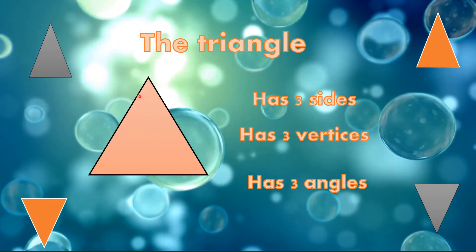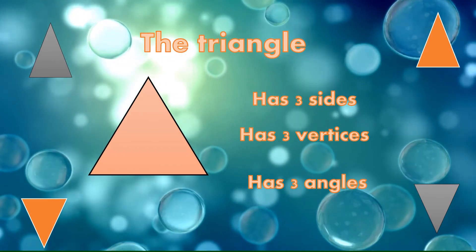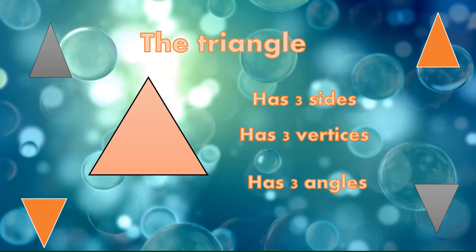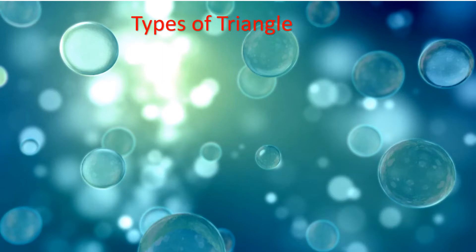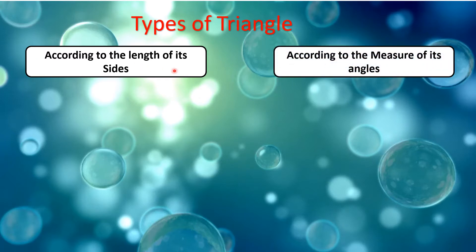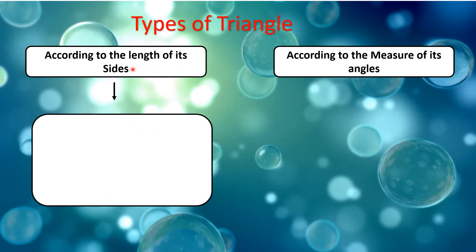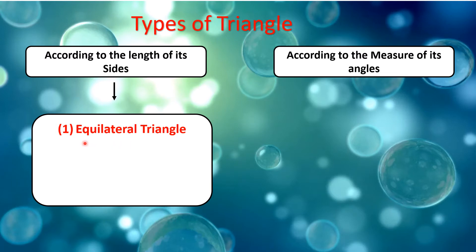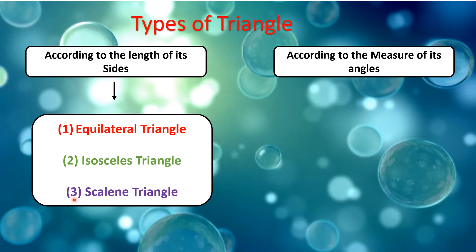Let's know the types of triangle. There are two types of triangle: according to the length of its sides, and according to the measure of its angles. According to the length of each side, there are three types: one, equilateral triangle; two, isosceles triangle; three, scalene triangle.